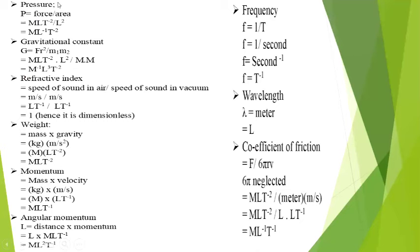Same goes for pressure. Pressure formula is force upon area. Force dimension is MLT⁻², and area dimension is L². Dividing, we get ML⁻¹T⁻².